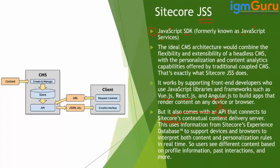To understand this, we have a diagram. Let's suppose this is your Angular or React application, and this is your Sitecore. In Sitecore you can put, create, and manage your content, which is actually stored in SQL Server. Through your browser you can send requests — for example, if you want to access the About Us page, that URL request will go to the Sitecore side, where you have this API.